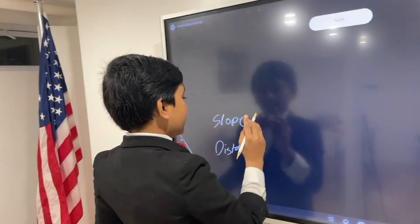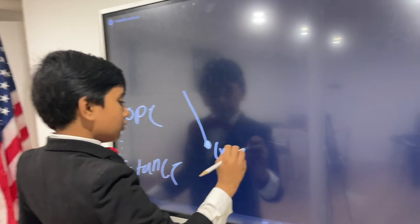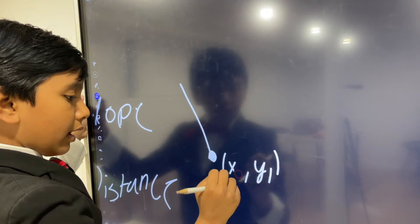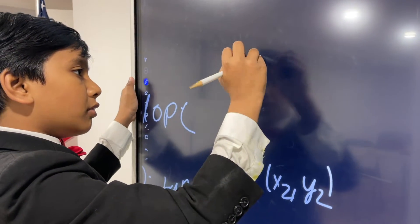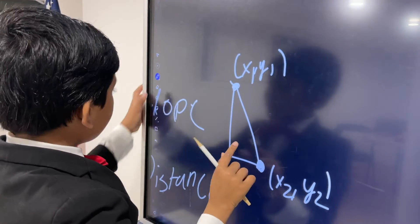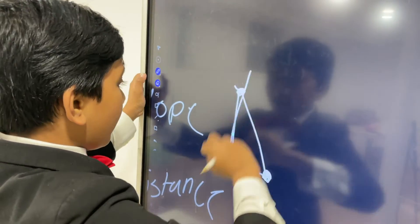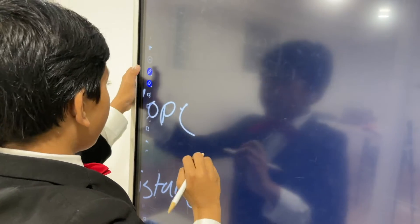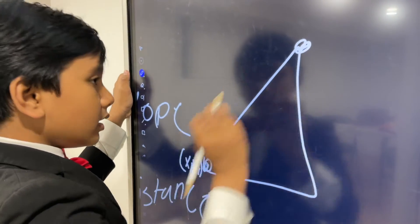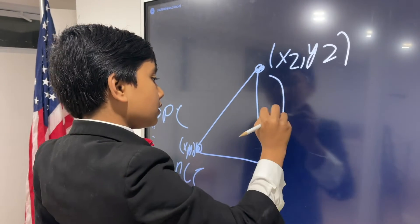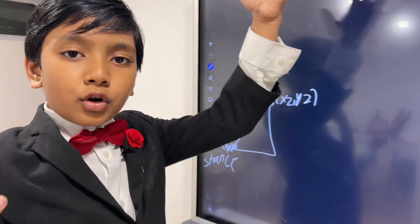Now the slope formula is pretty easy. So the slope formula, if you have x2, y2 and then you have x1, y1, then essentially the concept is, if we have x1, y1 and x2, y2, then essentially the slope is just how much you're traveling in the vertical direction divided by how much you're traveling in the horizontal direction.